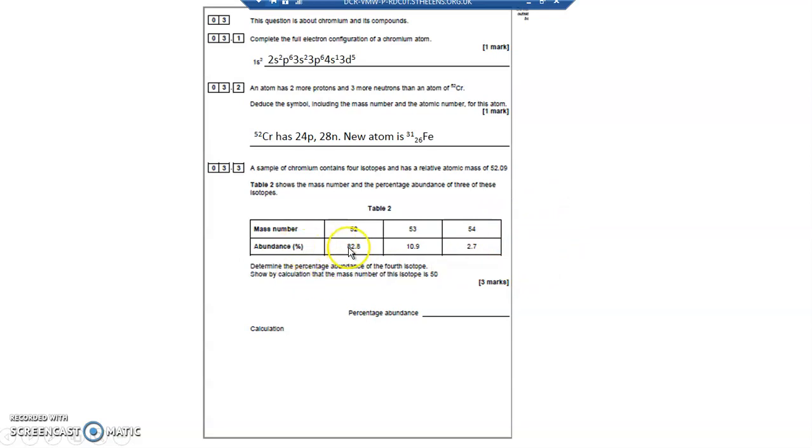One thing I can do is I can work out the percentage abundance. So if I add these all up, then the missing amount, the missing percentage that is, so 100, subtract these three numbers here, 82.8, 10.9 and 2.7, will tell me the missing percentage of the final isotope. I don't know its mass. So 100 take away 82.8, take away 10.9, take away 2.7. I've got 3.6% of another isotope.